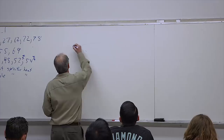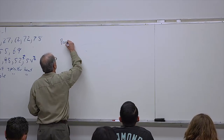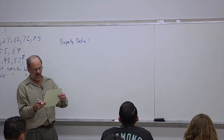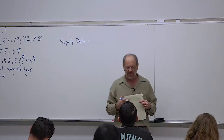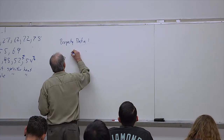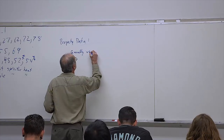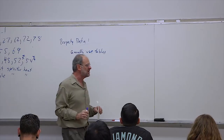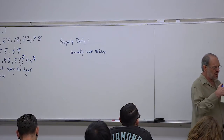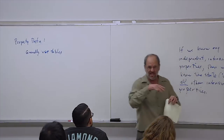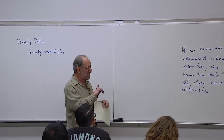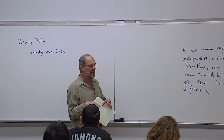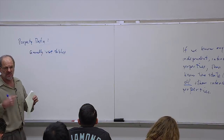Now let's talk about property data. For the most part we're going to use tables. The textbook provides tables for water (H₂O) and for the refrigerant R-134a. We won't do problems with ammonia, propane, or other unusual substances — just the data that's in your book.